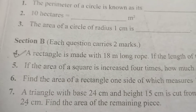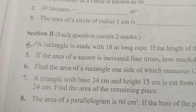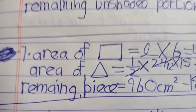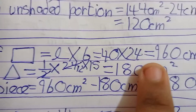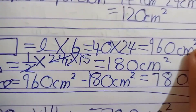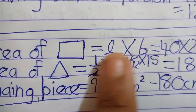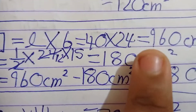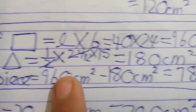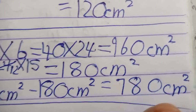Question seven: a triangle with base 24 cm and height 15 cm is cut from a rectangle of length 40 cm and breadth 24 cm. Find the area of the remaining piece. Area of rectangle is 40 multiplied by 24 which is 960 cm square. Area of triangle is 1 over 2 multiplied by 24 multiplied by 15, which equals 180 cm square. Remaining area is 960 minus 180 which is 780 cm square.